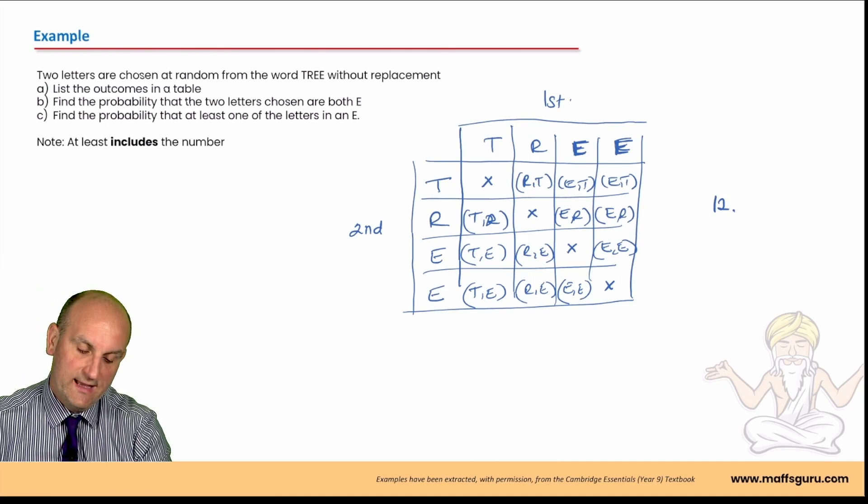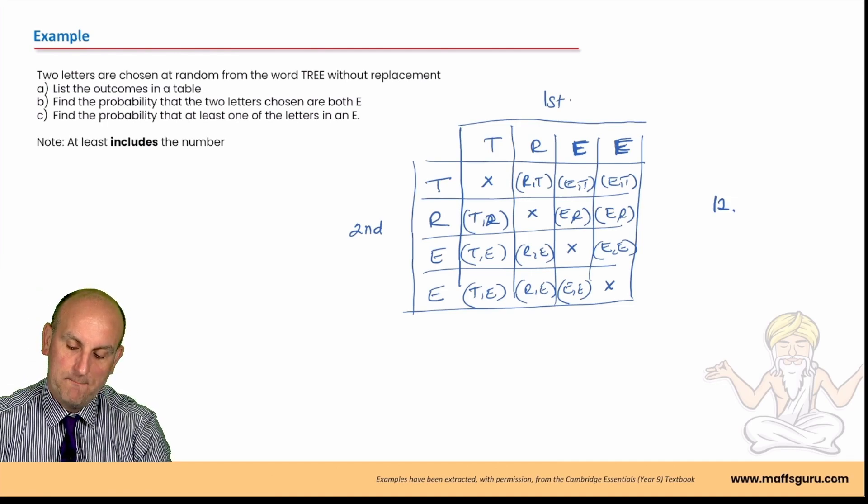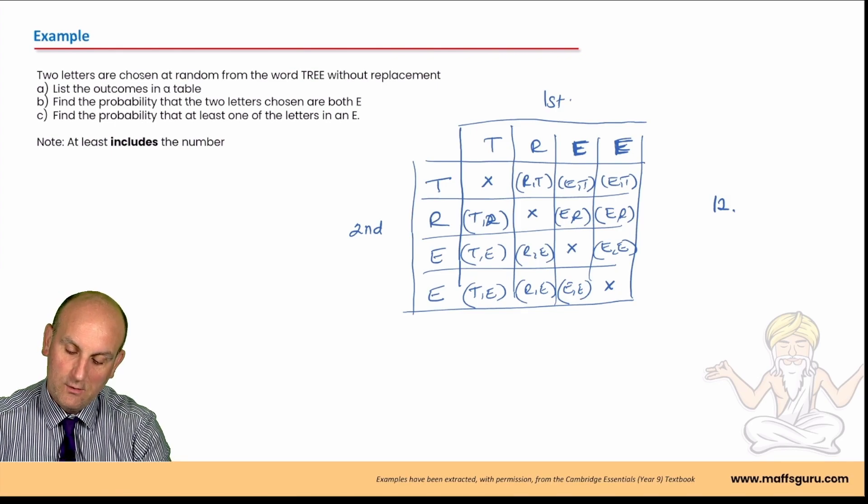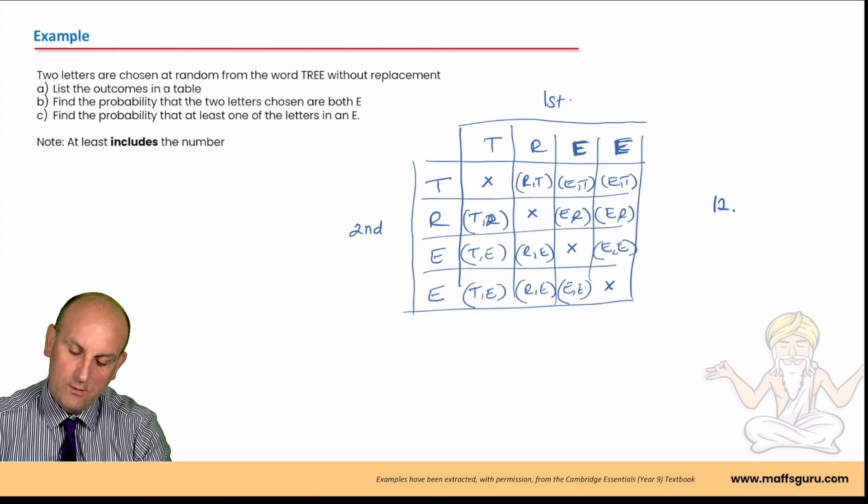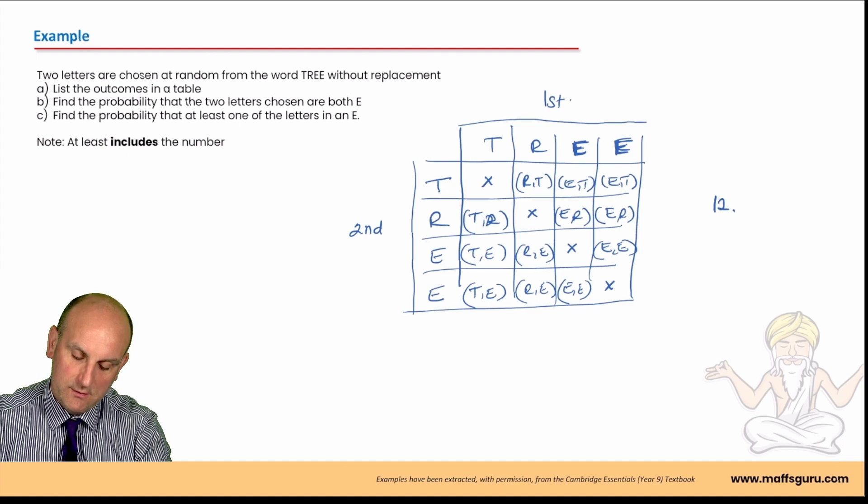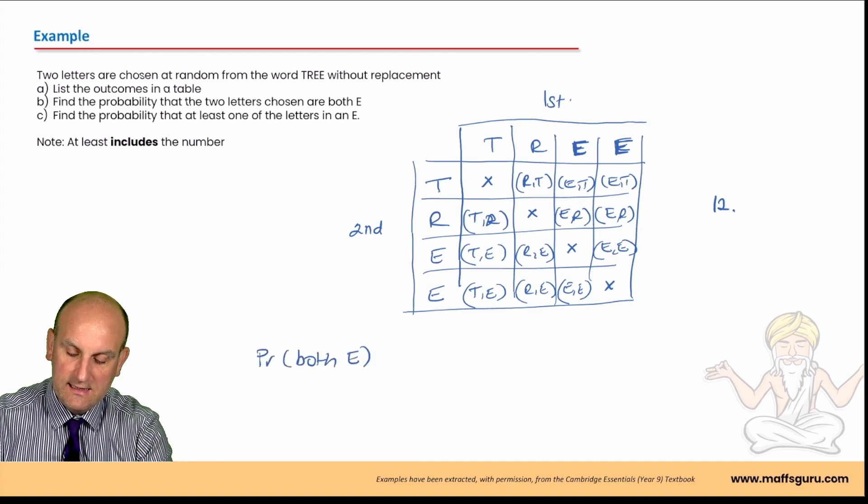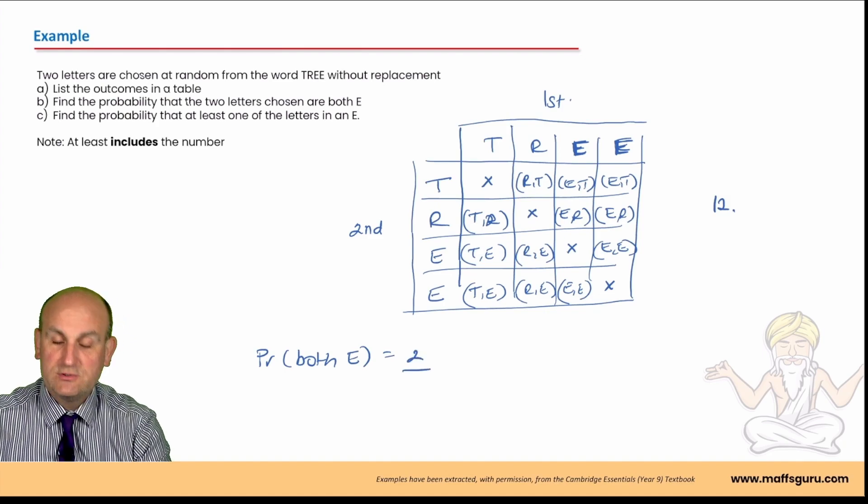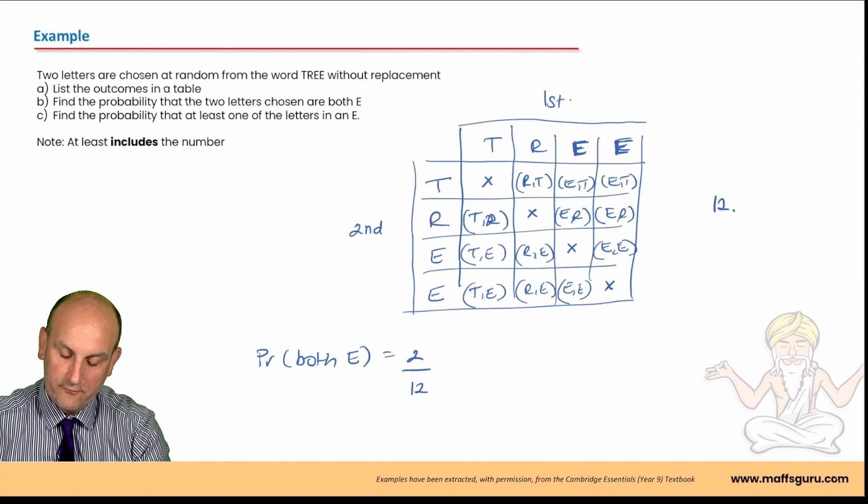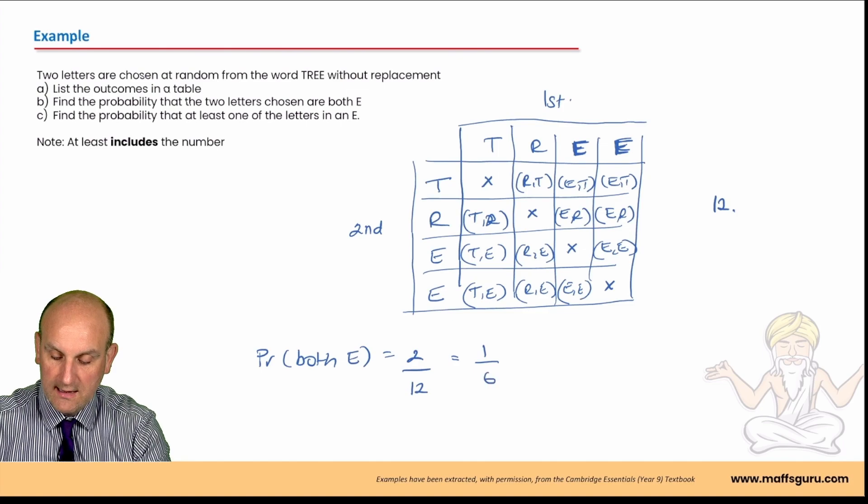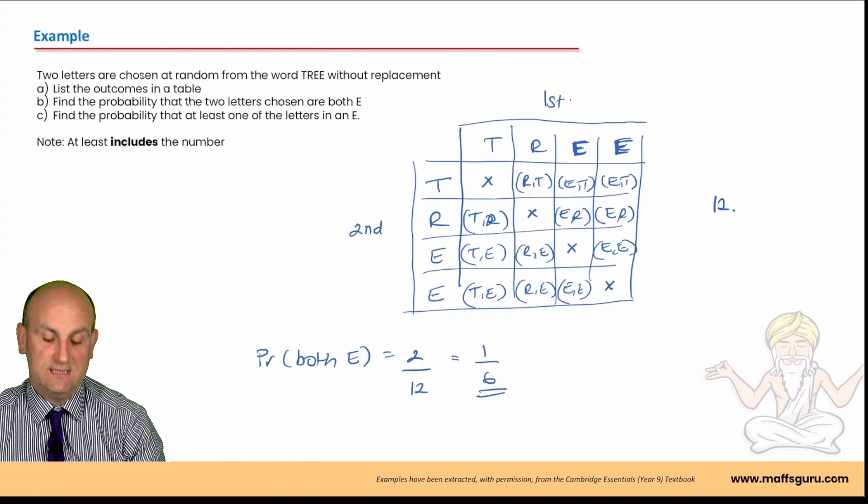Find the probability that the two letters chosen are both E. Well, how many outcomes are those? Well, there's one, two. So, the probability they're both E is going to be two out of how many? Twelve, which is going to give me one out of six. Again, you must, must cancel these down.